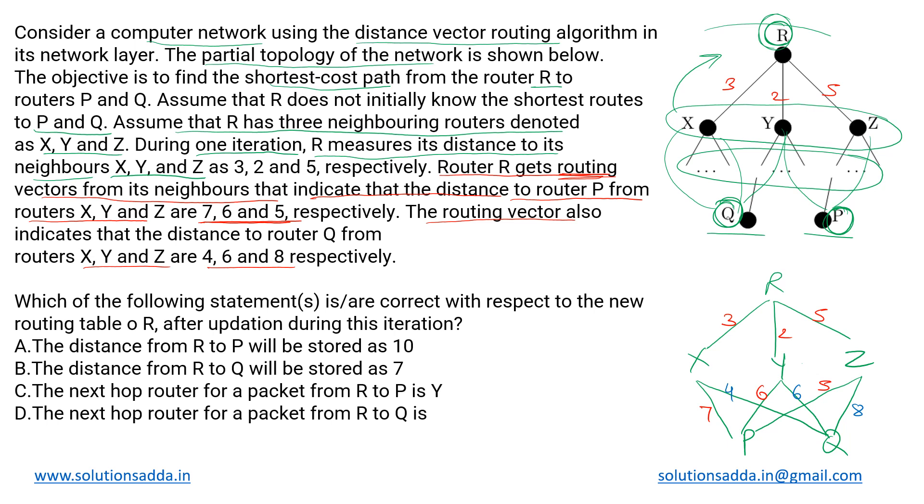This is what we currently have. Now what are they asking? Which of the following statements are correct with respect to the new routing table that will be created at R during this particular iteration? So when these distances are returned to R by its neighbors, it will update its routing table. It will now be able to resolve its distance with both P and Q.